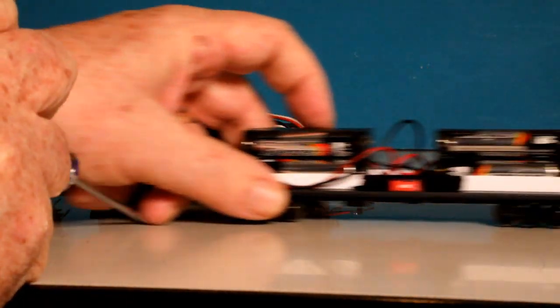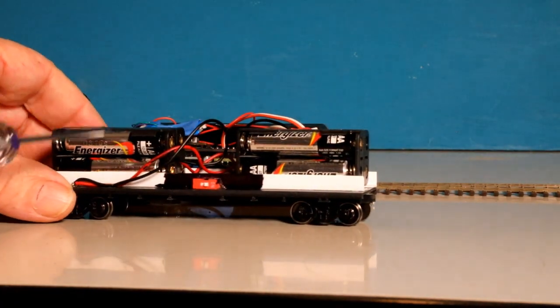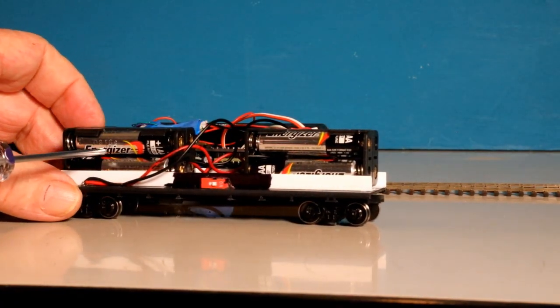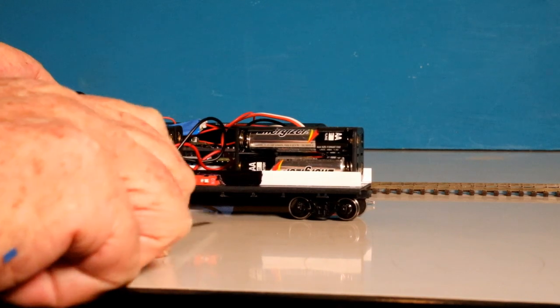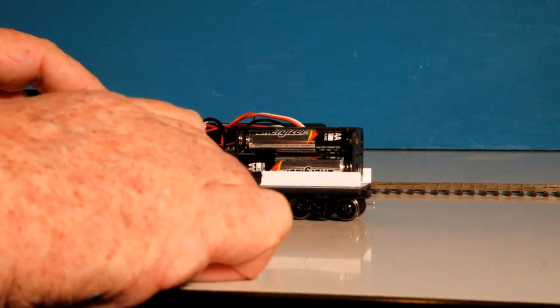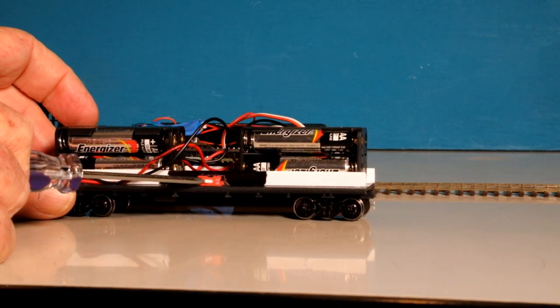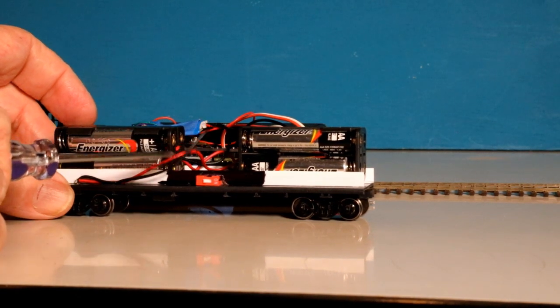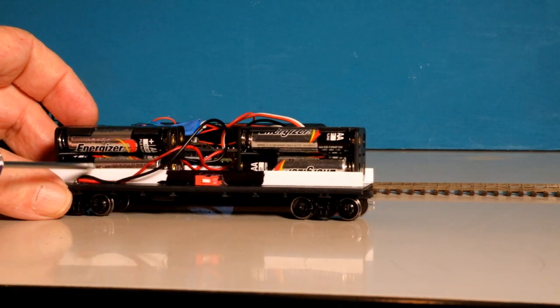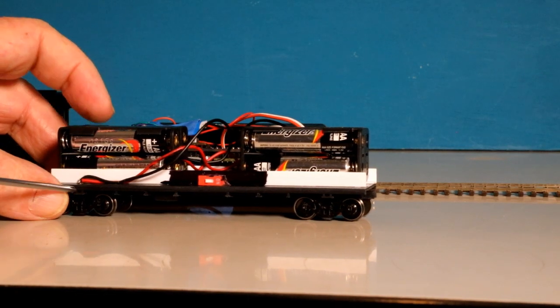Here is the battery car. You can see I'm just using alkaline AAA batteries. Here's the switch, which is still on, which I can turn off. The switch turns on and off all the power. So now there's no power being used anywhere, no power being sent anywhere.